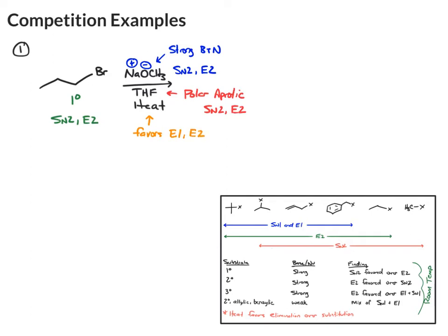So look at everything together and see if you can find something that matches. Well, in this case, what matches is going to be E2. Had the heat not been present, then we would have been all tied up between SN2 and E2. That's when you would use this chart and say primary strong SN2 would be favored over E2. But the heat is going to favor the elimination over substitution.